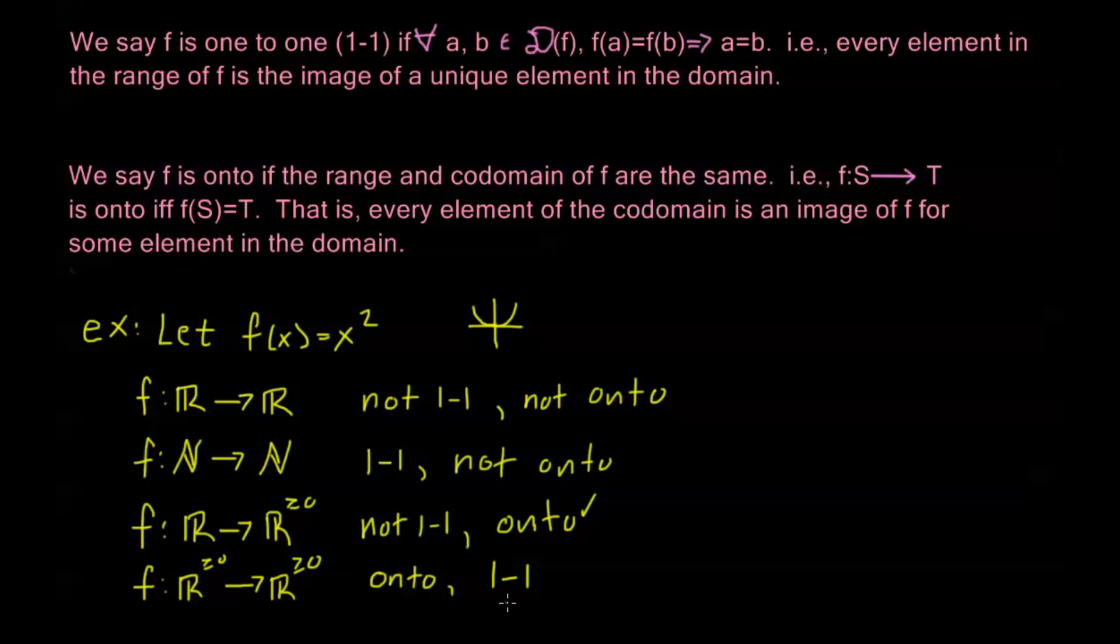If my domain is just non-negative real numbers, then each element of my domain is going to correspond to a unique element in my range. There's not going to be any multiplicity there. So this is both an onto and a one-to-one function. We call that a bijection. A one-to-one and onto function is called a bijection.